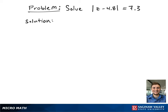Here we have the absolute value equation: the absolute value of z minus 4.8 equals 7.3. This means that z minus 4.8 is equal to 7.3, or z minus 4.8 is equal to negative 7.3.